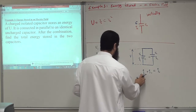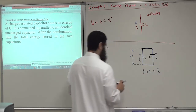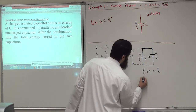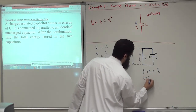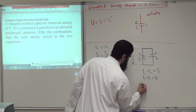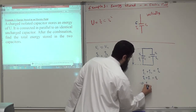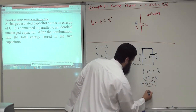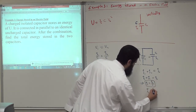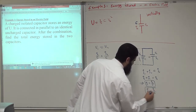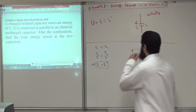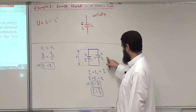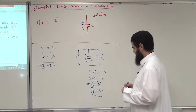Since Q1 equals Q2 and Q1 plus Q2 equals Q0, replacing Q2 with Q1 gives 2Q1 equals Q0, so Q1 equals Q0 over 2. Similarly, Q2 equals Q0 over 2. The initial charge Q0 is distributed half on each capacitor.